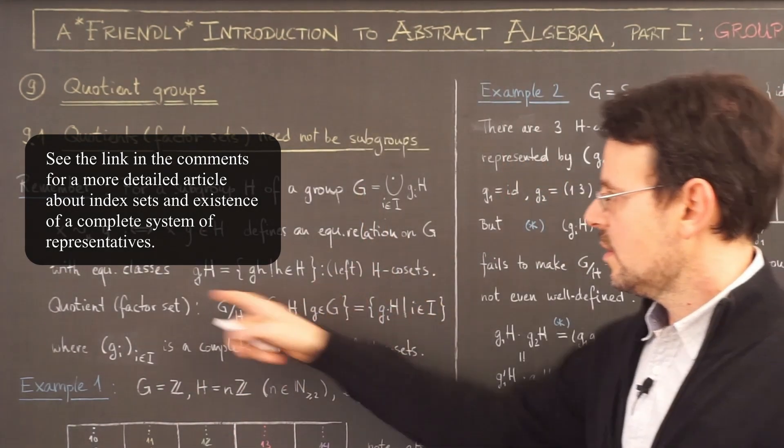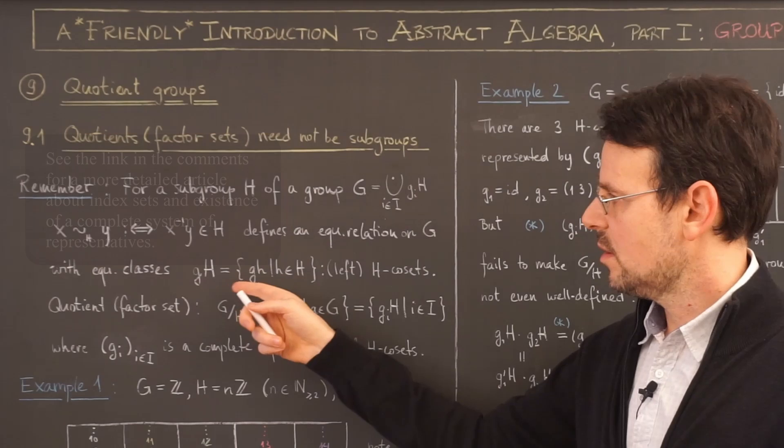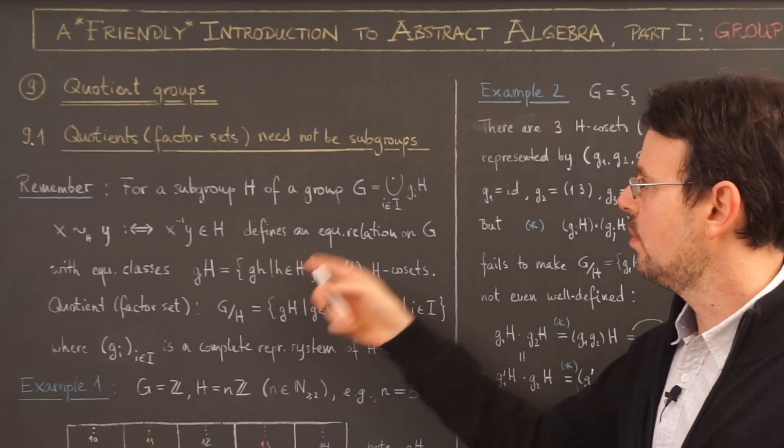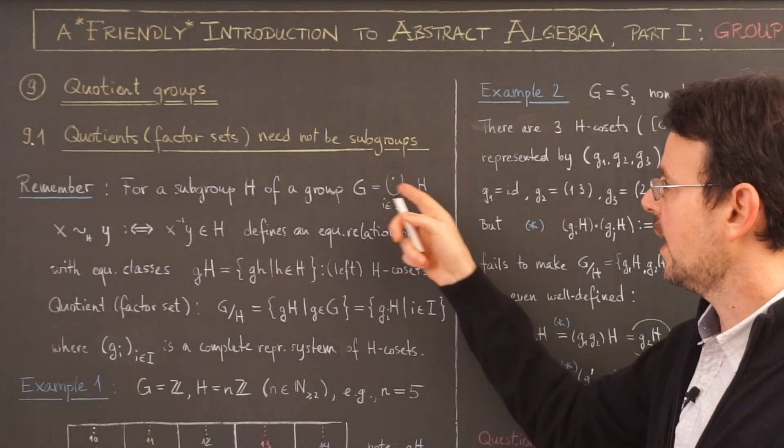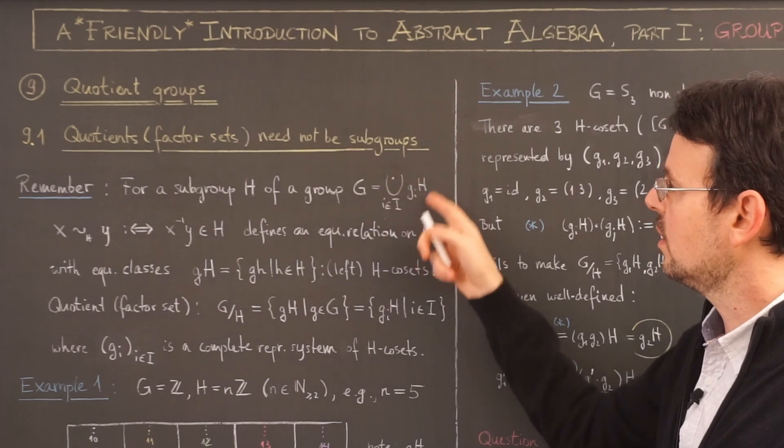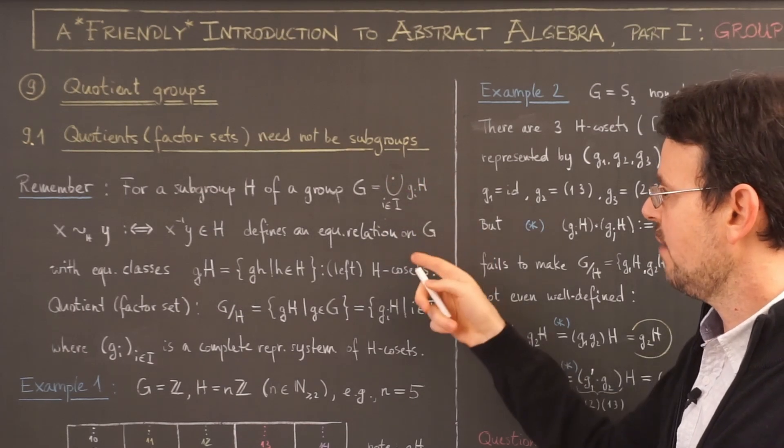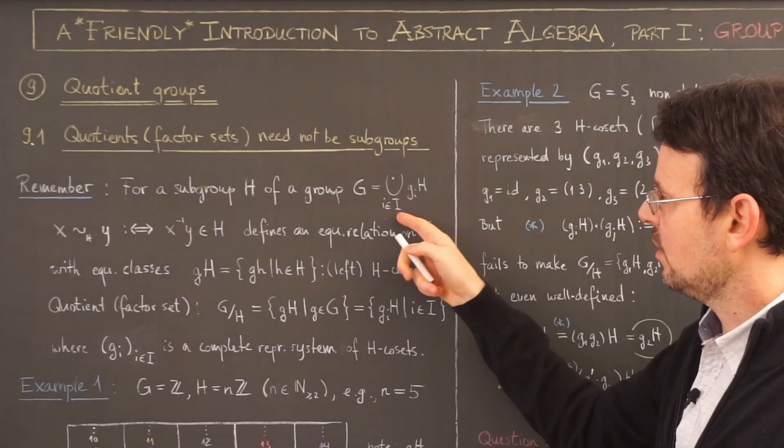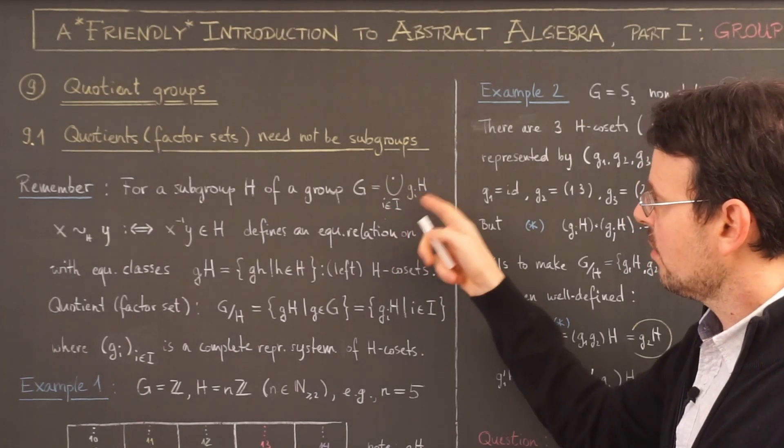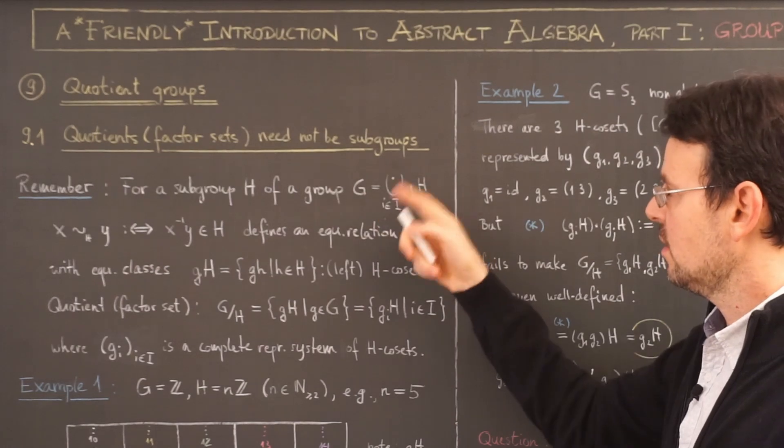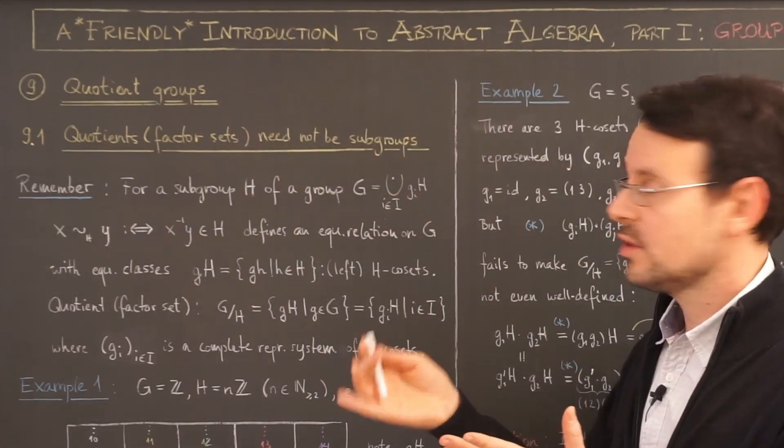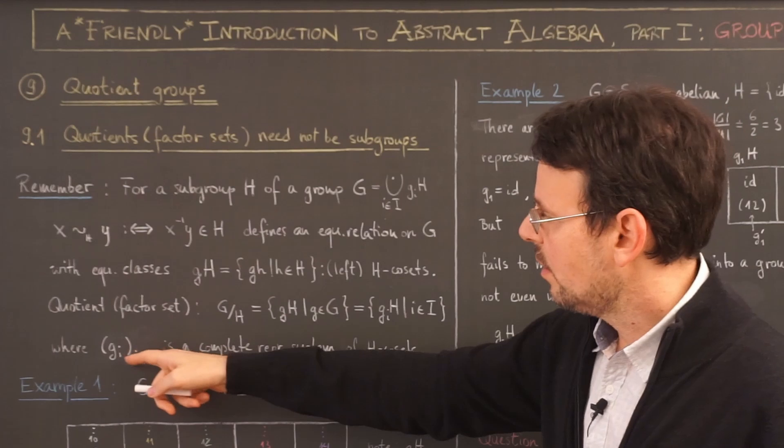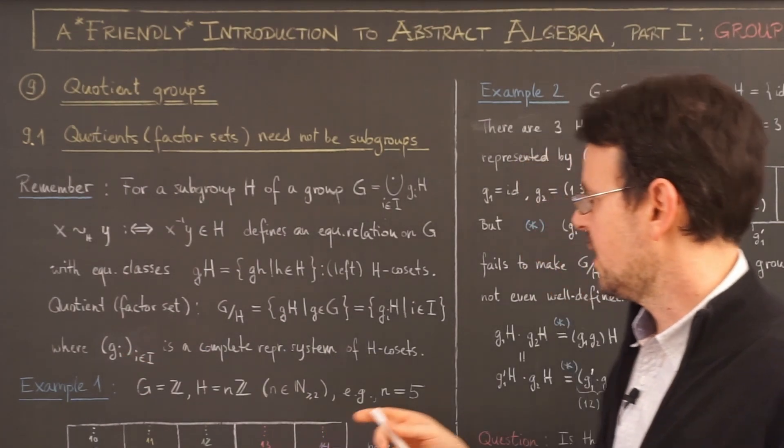Remember, since these equivalence classes form a partition of the group, the group can be written like this as a disjoint union of some left cosets and they are indexed by a set capital I. And all the representatives that yield such a partition of the group G, then I call a complete representative system.